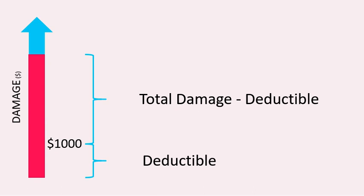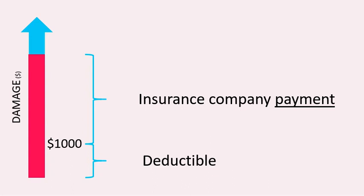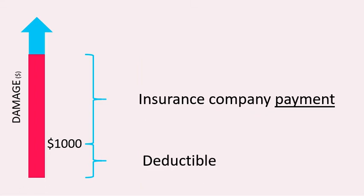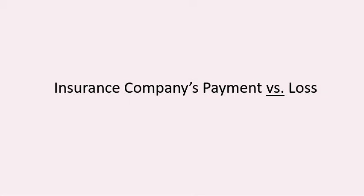This is really important to watch out for. As I just showed you, the total damage minus the deductible is what the insurance company's payment is going to be. There's a difference between the insurance company's payment and the total loss. The total loss encompasses everything, all the damage, including the deductible — but the insurance company's payment is only the total loss minus the deductible. The insurance company doesn't have to pay that deductible. So it's really important to always distinguish between the insurance company's payment and the loss. When looking at Exam P questions, pay attention to the wording to know whether they're talking about the insurance company's payment or the loss.